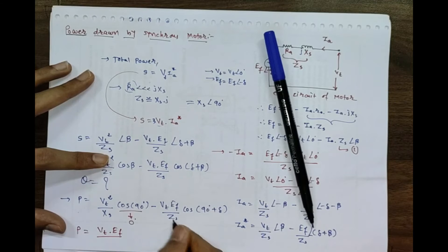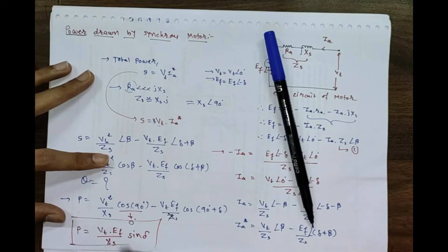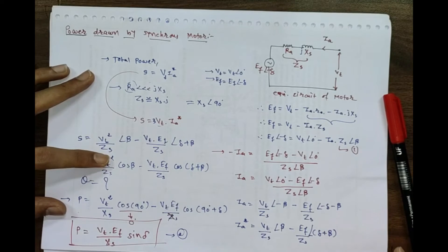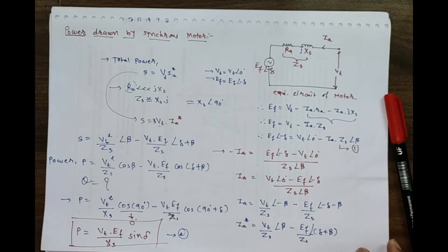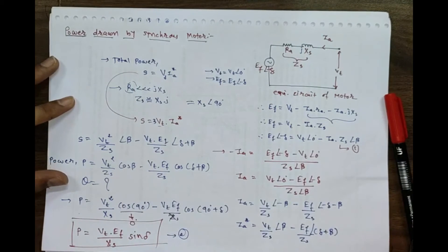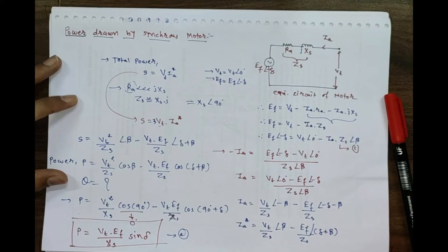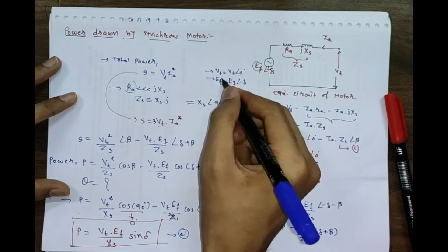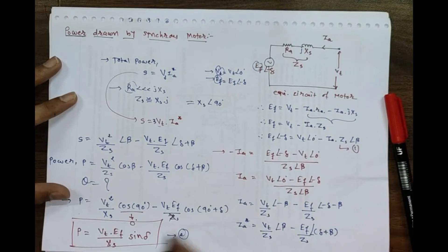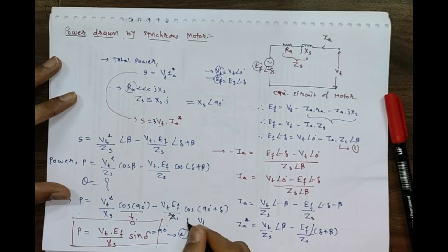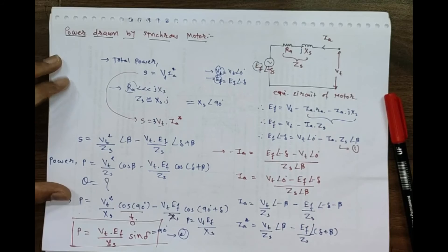This gives the simplified equation: P = (Vt·Ef / Xs)·sin(delta). This is the active power drawn by a synchronous motor — a very important equation in electrical engineering. As a special case, when delta = 90°, sin(delta) = 1 and the power is maximum: P_max = Vt·Ef / Xs.